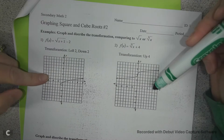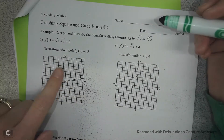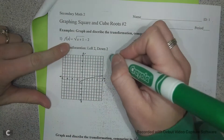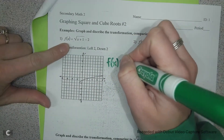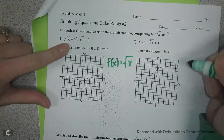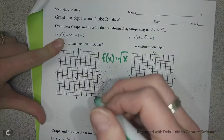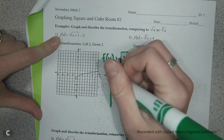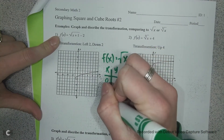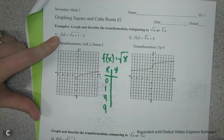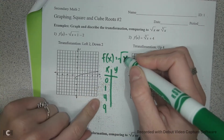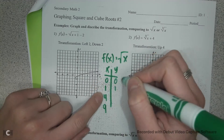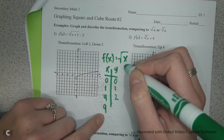I've already done the first two for you. Remember the parent function for a square root would be f of x equals the square root of x. The numbers we would want to pick for this are 0, 1, 4, and 9 because those will give us pretty values. So if I plug these numbers in: the square root of 0 is 0, the square root of 1 is 1, the square root of 4 is 2, and the square root of 9 is 3.